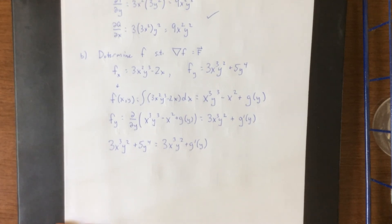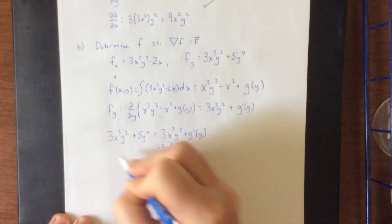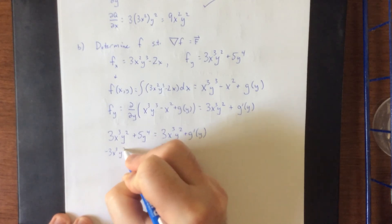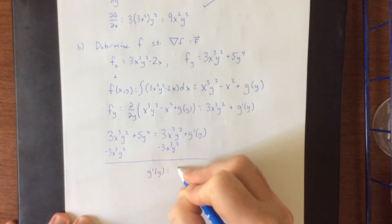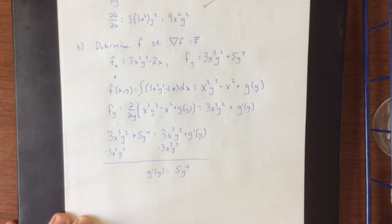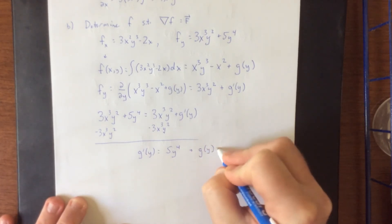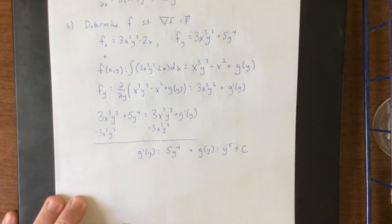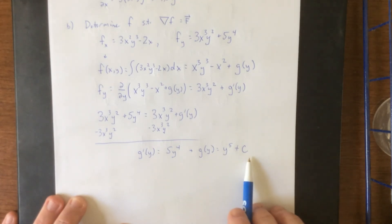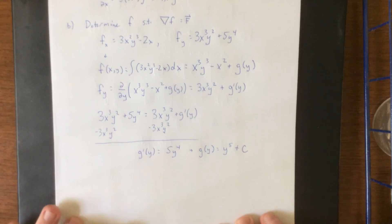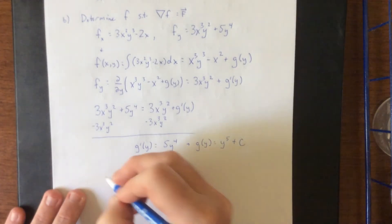The goal is to isolate g, so I subtract the 3x³y² term over to the other side. Those two terms are the same and cancel, leaving us with g′(y) = 5y⁴ — and as expected, this is a function of only y. Integrating this gives us g(y) = y⁵ plus a constant. This is an indefinite integral, which is why the plus c is just a plus c — no more functions of x. Now I head back and substitute this g(y) into our earlier expression to get the potential function.